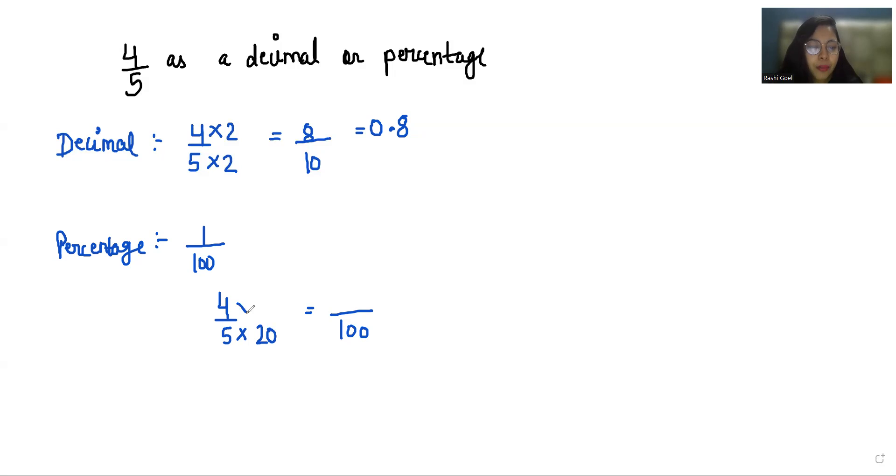If I multiply the denominator, I have to multiply the numerator as well. So it becomes 80/100, that is 80%. I hope it's clear and you find it useful.